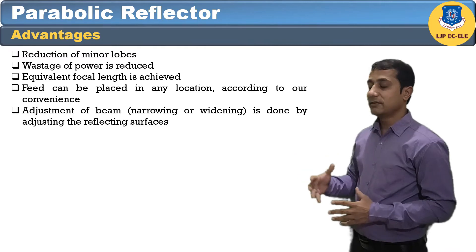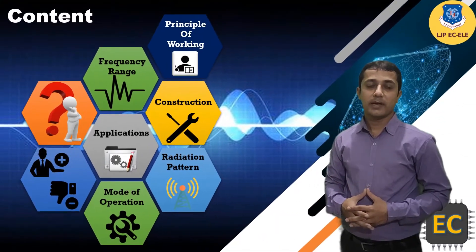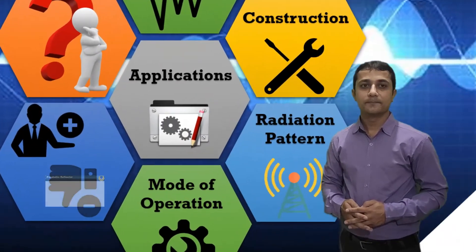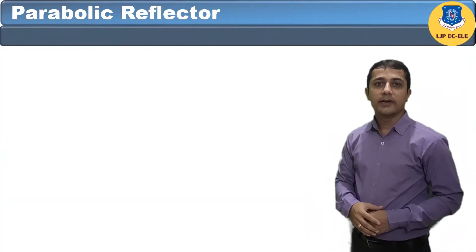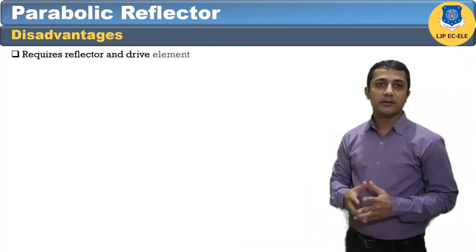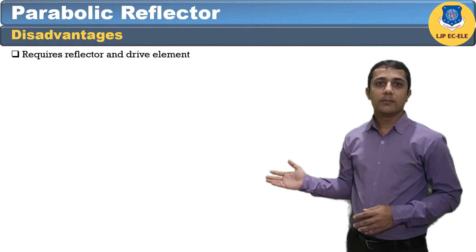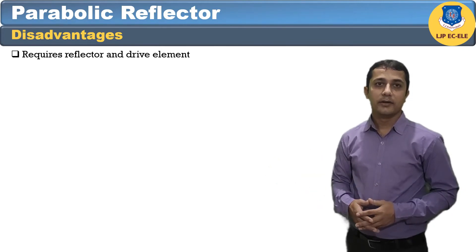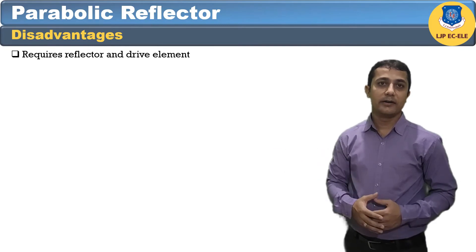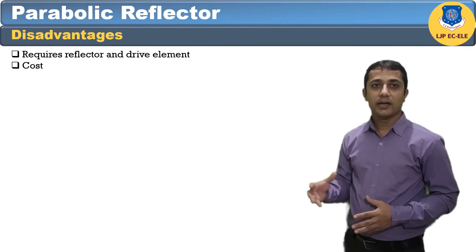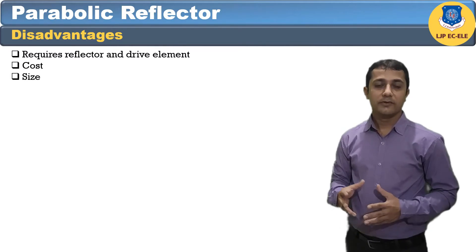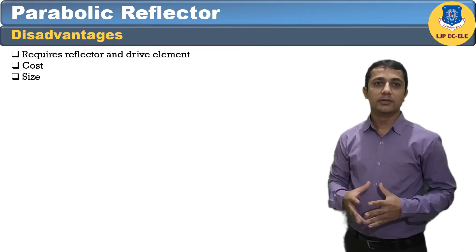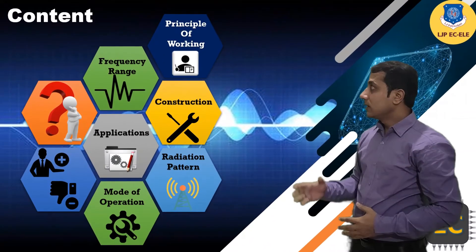Now let us see the disadvantages of this parabolic reflector antenna. Some of the power gets reflected from the parabolic reflector is absorbed, so this becomes a problem with small dimension parabolics. It requires reflector and driver element. Cost is high and the size, which are the disadvantages of the parabolic reflector.